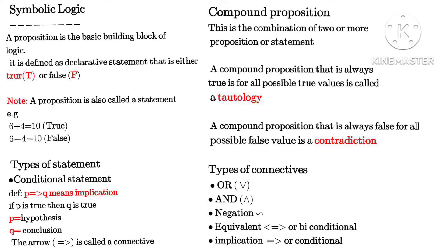If the compound proposition is always false for all possible values, it is called a contradiction. There is a difference between a tautology and a contradiction. When we say tautology, it means we are speaking in terms of true values only — p is true, q is true — it is a tautology. But when p is false and q is false, it is a contradiction.